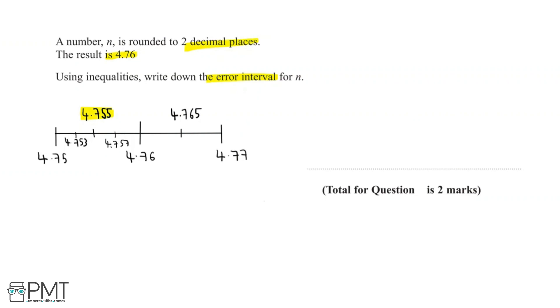So now let's look at 4.765. If we round 4.765 to two decimal places, we'll get 4.77, which isn't the same as 4.76. But let's take a look at the numbers in between.